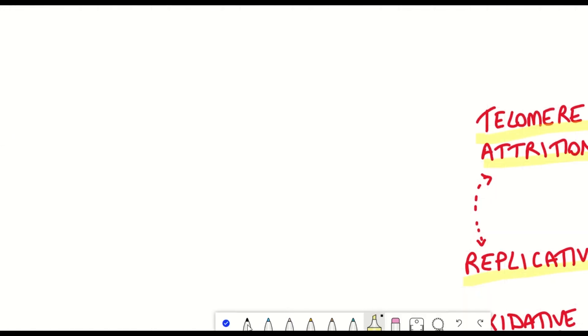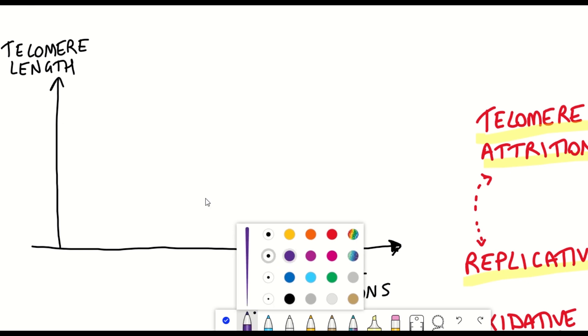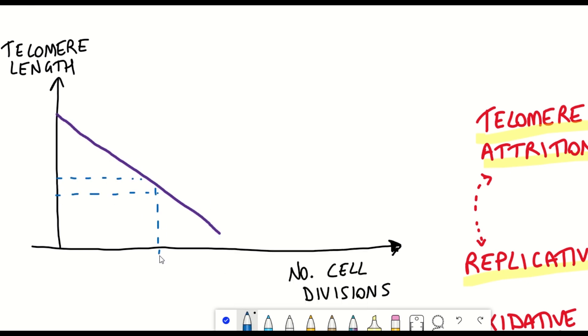So why doesn't a cell prevent this telomere attrition from occurring? Well, besides in a few cells where they do have the capability to enhance the length of telomeres, it is thought that by limiting the number of times that a cell can divide, this can help to prevent the development of tumors. And this is because tumors can develop from uncontrolled proliferation. So by limiting the number of times a cell can divide, it instead causes a cell to enter replicative senescence.